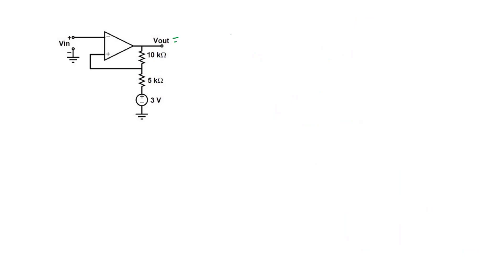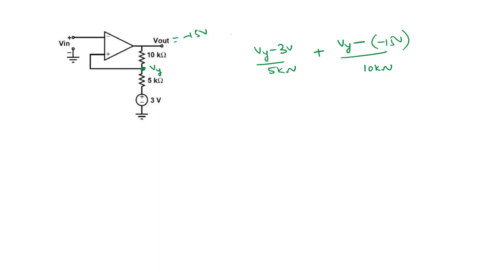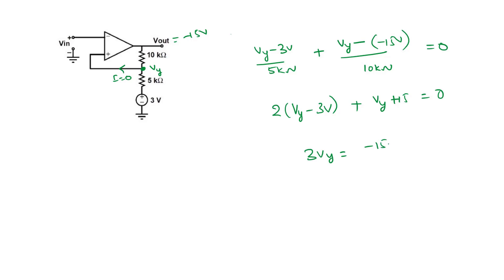Similarly, assuming the output is at minus 15 volts and applying KCL at node Vy: (Vy − 3) / 5kΩ + (Vy − (−15)) / 10kΩ = 0. Simplifying gives 2Vy − 3 + Vy + 15 = 0, so 3Vy = −15 + 6 = −9, therefore Vy equals minus 3 volts.